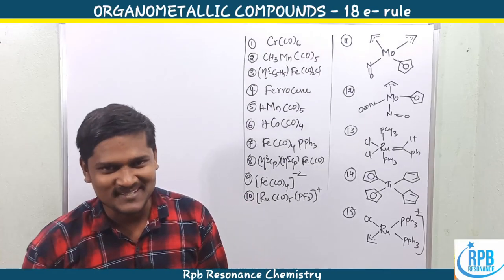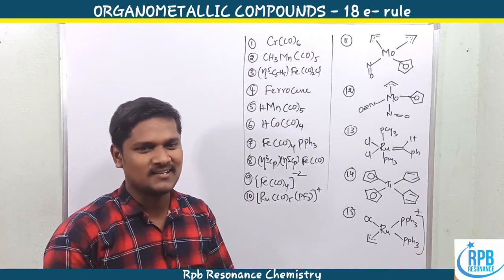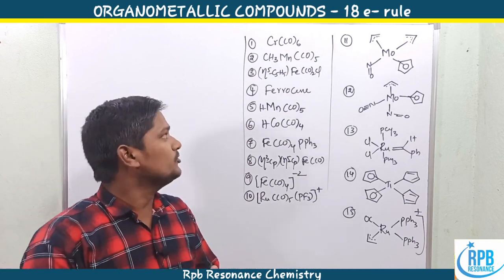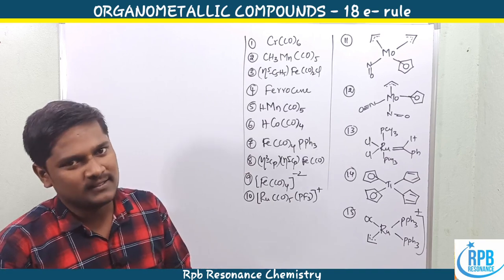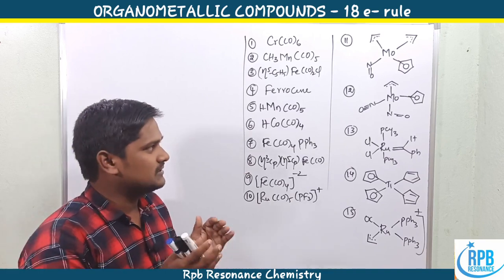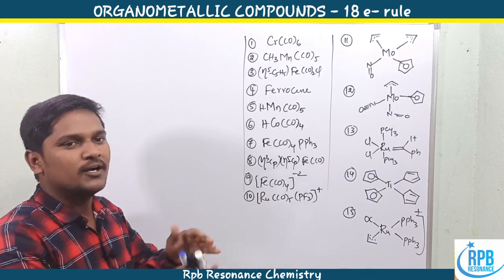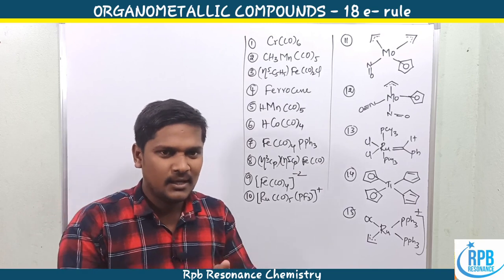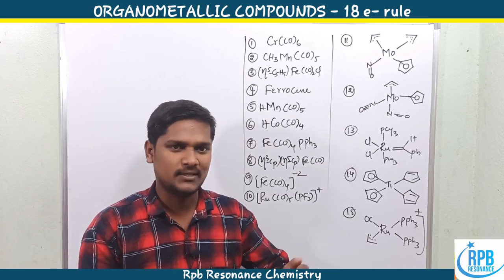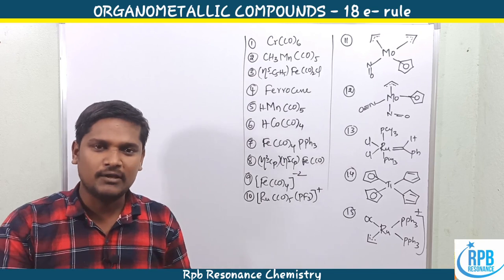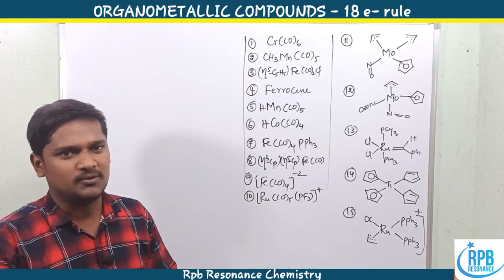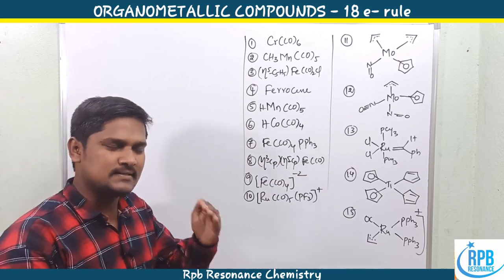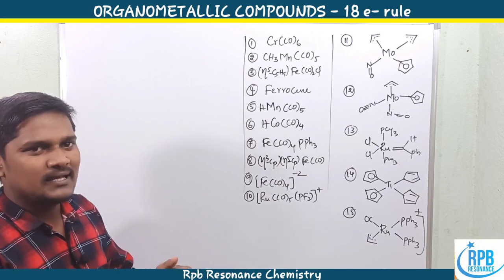Welcome to RPB Resonance Chemistry. Continuing our lectures on organometallic chemistry, this is lecture number three. I'm going to discuss the 18 electron rule and solve about 15 examples regarding 18 electron rule calculations. If any complex obeys the 18 electron rule, that is a stable organometallic compound; if it does not obey the 18 electron rule, that is an unstable one. Based on the 18 electron rule, we can predict stability.